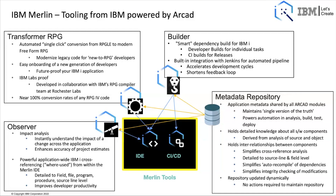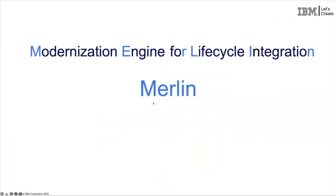I also want to do a shout-out to Transformer RPG. That's kind of the first step in this modernization process. We're talking about all this new modern tooling, and the only thing that really makes sense is: if you're making a change, the first thing you want to do is bring that code up to a modern standard — which is fully freeform RPG — before all this other tooling comes into play, and all of that is kind of automatic. So we're really excited about what Merlin, our Modernization Engine for Lifecycle Integration, has to offer.